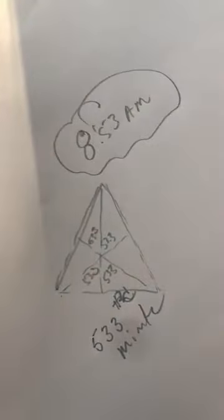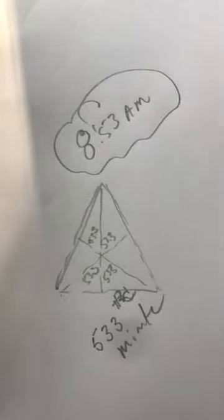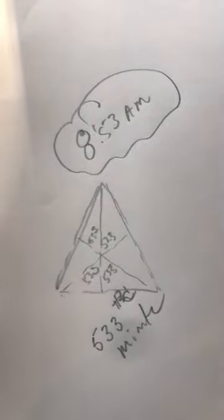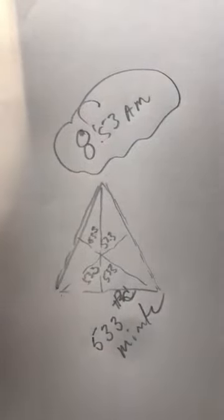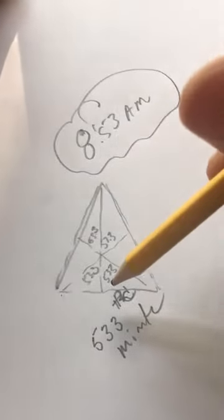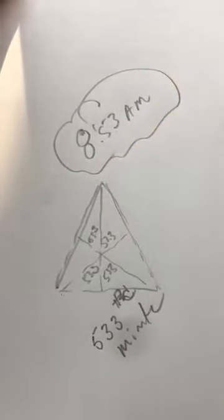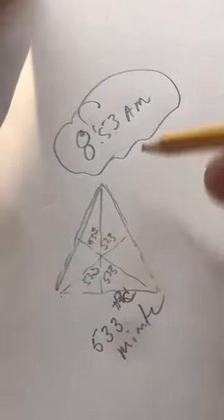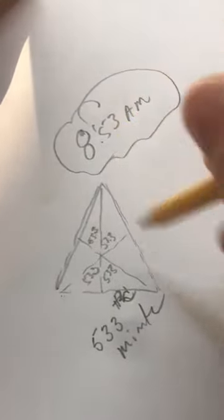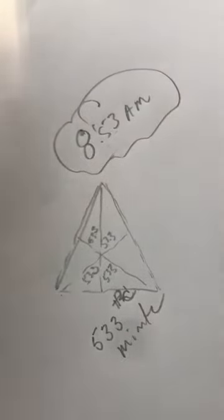53.3 degrees, each one of these angles, represents the 533rd minute. That's going to be when the birth of the man-child is, which is going to be 8:53 AM Jerusalem time zone. I'm not going to get into daylight savings times, I'm just going to stick with Jerusalem time zone.